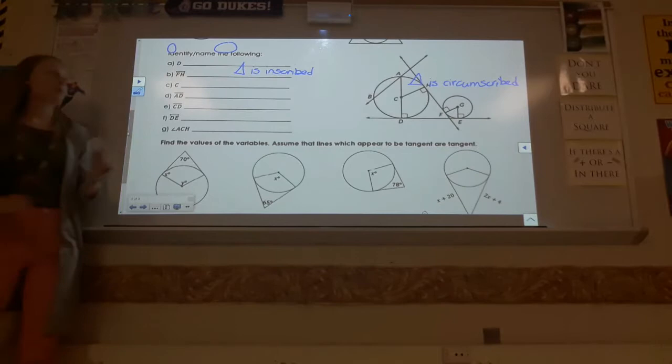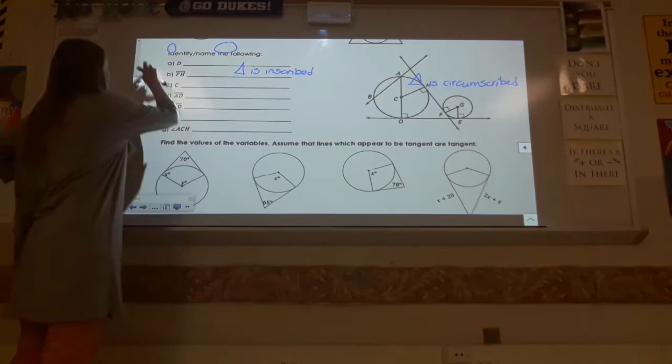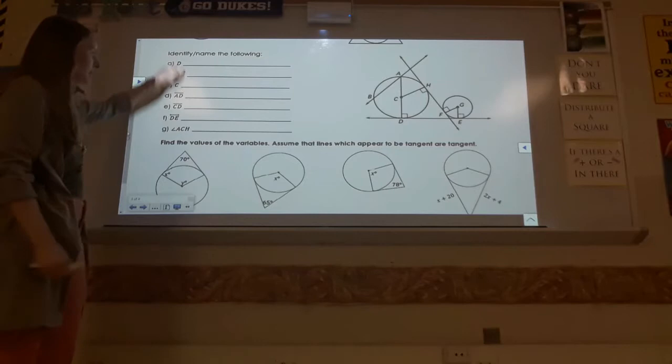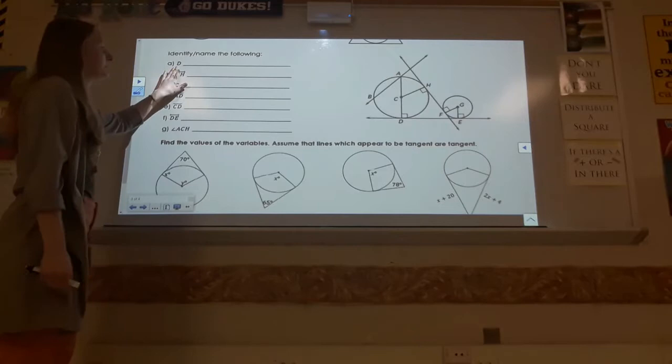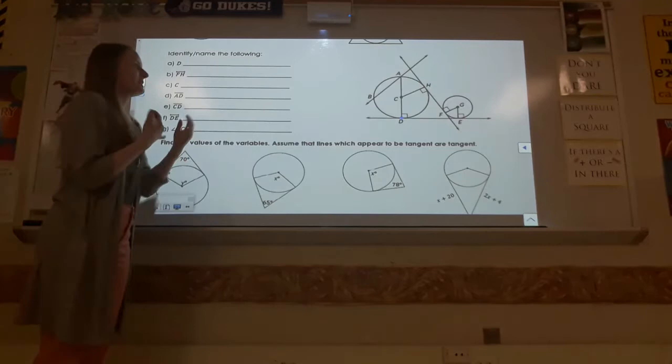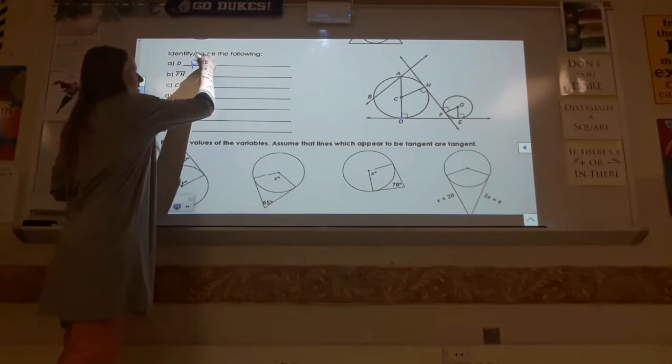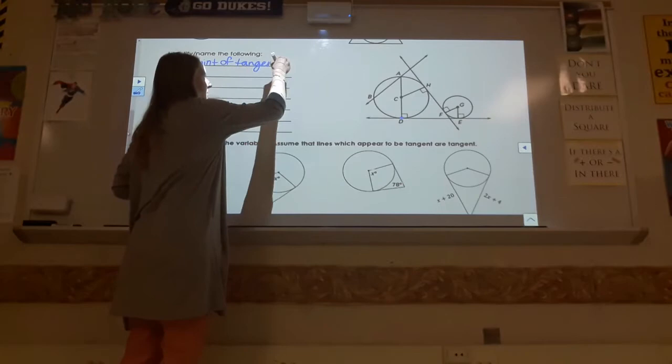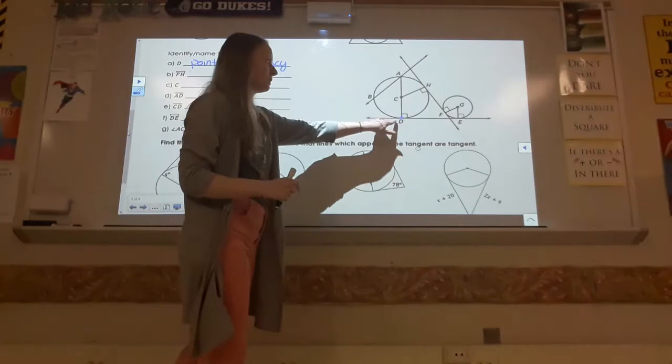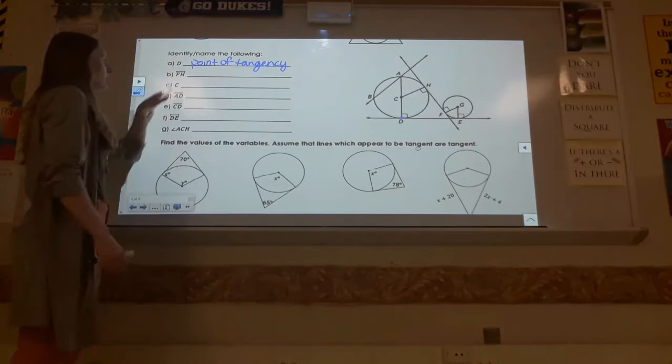We're also going to see this activity that ties all the vocabulary we've talked about from day one and today. We're going to look at this picture and figure out what the different objects are. The first one is point D, which is a point, but specific to this diagram it's more than just a point. We would call that a point of tangency, because D is where this line touches the circle. Because that line only touches the circle once, it's a tangent. Therefore, that makes D the point of tangency.